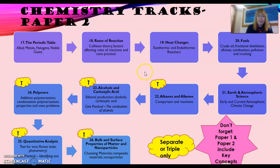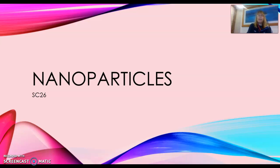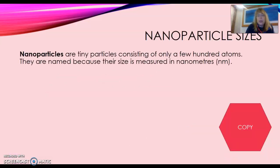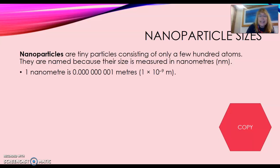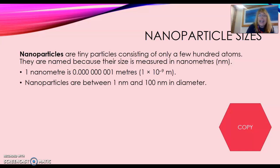So that's your heading for today — nanoparticles. This is an area of science that's pretty new, known as nanoscience, and it deals with these nanoparticles. These are particles that are very, very small, consisting of only a few hundred atoms. Their size is measured in nanometers, hence the name nanoparticles. A nanometer is one times ten to the minus nine times smaller than a meter, and nanoparticles are anywhere between one nanometer and a hundred nanometers in diameter.